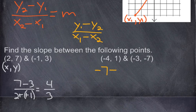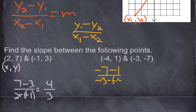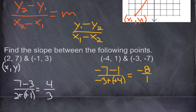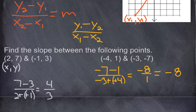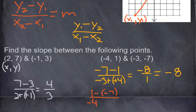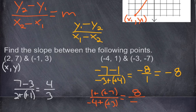In the next example, starting with the other point: negative 7 minus 1 over negative 3 minus negative 4. That gives us negative 8 over 1, which reduces to a slope of negative 8. To prove it doesn't matter which you start with: starting with 1 minus negative 7 over negative 4 minus negative 3 gives 8 over negative 1, which still gives negative 8 as your slope.